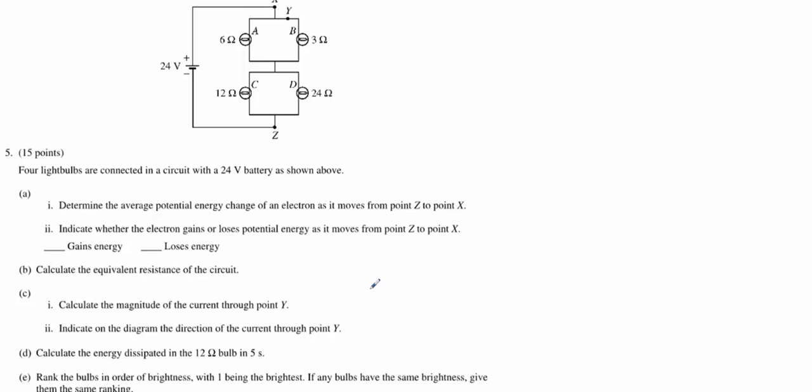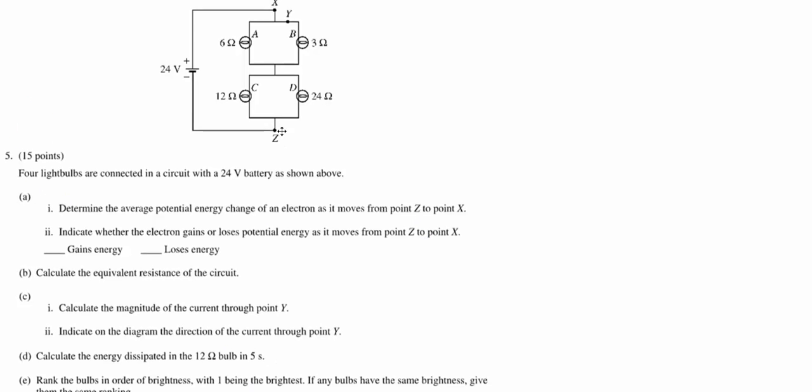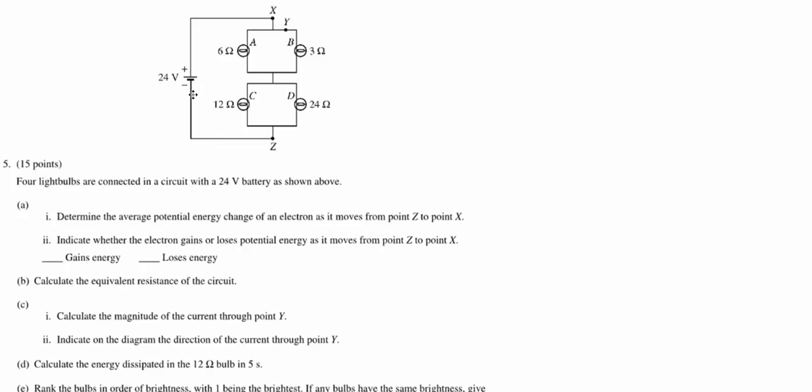All right, this is number five from the 2012 AP Physics B exam. It is a circuits problem. We've got the circuit given here, a 24 volt battery supply, a couple parallel branches in series with each other, a couple reference points, and they're all lamps with given resistances.